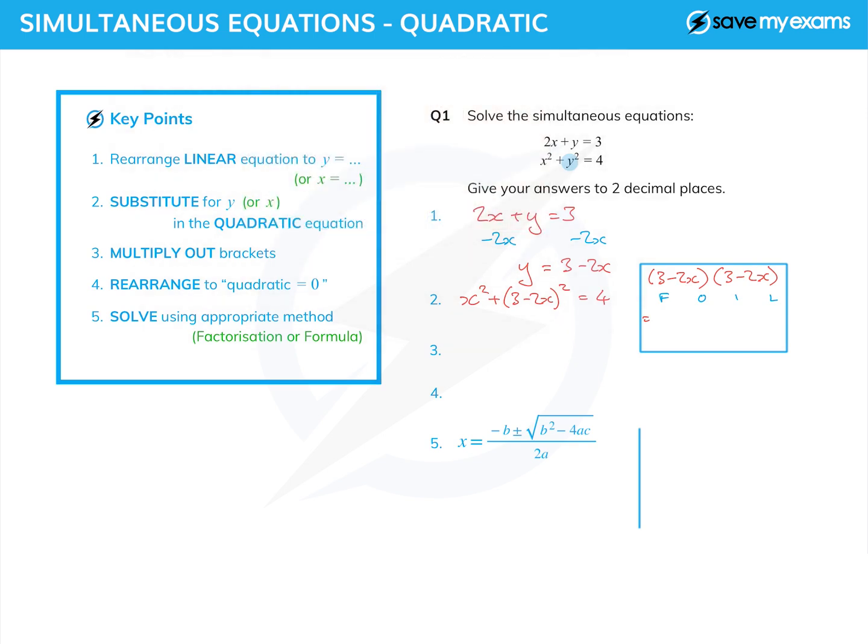FOIL stands for first, outer, inner, last. The first term in each bracket is the three and the three, and three times three is nine. The outer ones, the three and the minus 2x, multiplied together to give me minus 6x. Inner: minus 2x times three is minus 6x as well.